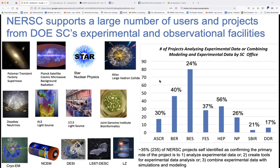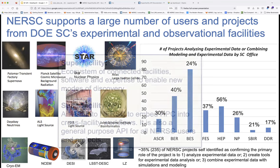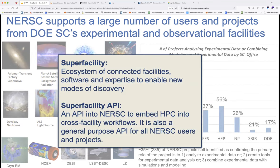From the knowledge that LBL has in working with experimental facilities — working between NERSC, the Computational Research Division, and ESnet — you can make better science and better results if you start working together. The Superfacility is the ecosystem of connected facilities, software, and expertise to enable new modes of discovery. The Superfacility API was one part of that project: the idea is you create an API into NERSC to embed HPC into cross-facility workflows.